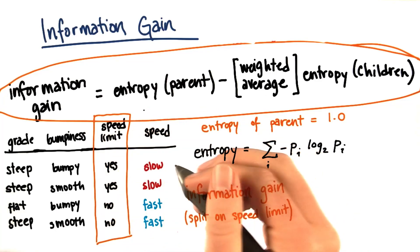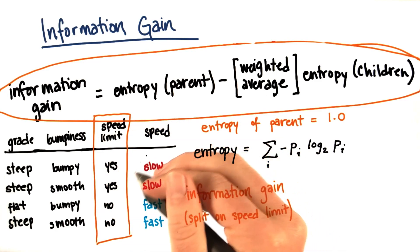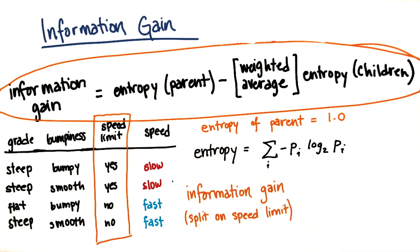As it happens, when we split based on speed limit, we get perfect purity of the branches that we make as a result. So our information gain is going to be equal to 1.